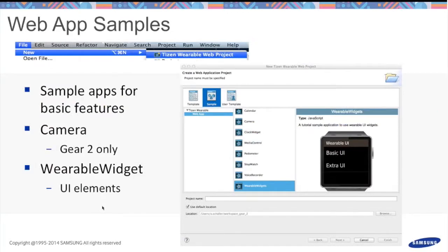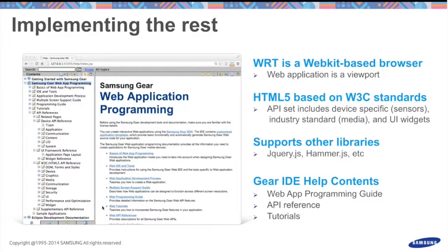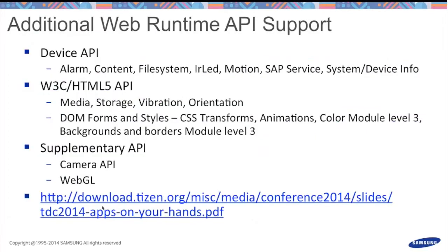Samples are available in the IDE as Wei showed — take a look, they're fairly well done. There's also help contents in the Help menu that describes the full API set and how to develop a web app in Tizen. Available APIs for standalone web apps include alarm, content, file system, IR LED, motion, device information APIs, W3C standard HTML5 APIs, and APIs for the camera or WebGL. There's also a slide deck from our Tizen Developer Conference that walks through creating a basic web app using these APIs.